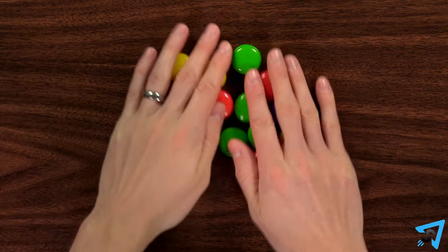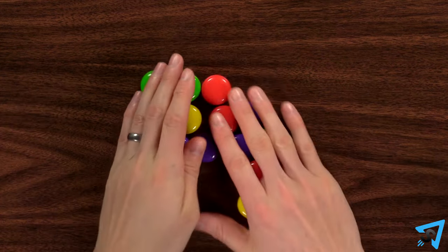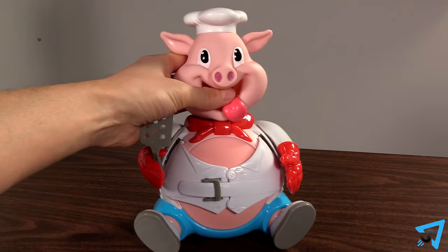Place the hamburgers color side up on the table and mix them up. Place the pig on the table.